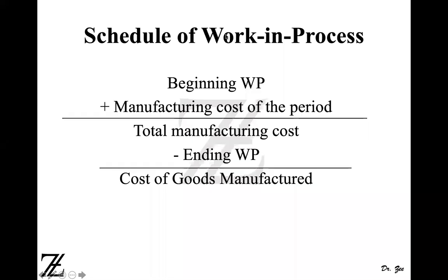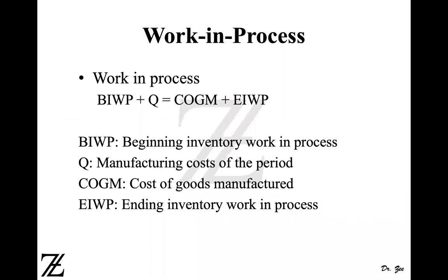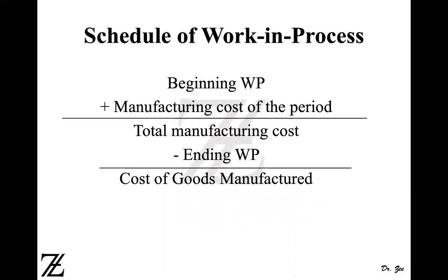We can also prepare a schedule of work in process. Beginning work in process plus manufacturing cost of the period Q gives total manufacturing cost. Then subtract ending work in process to solve for cost of goods manufactured. You can expand this as: beginning work in process plus direct material used plus direct labor plus factory overhead equals total manufacturing cost, minus ending work in process equals cost of goods manufactured.